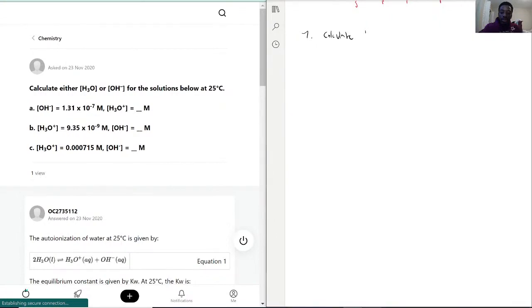And problem C is quite high relative to the others at 0.000715, which translates to 7.15 times 10 to the negative 4 molarity.